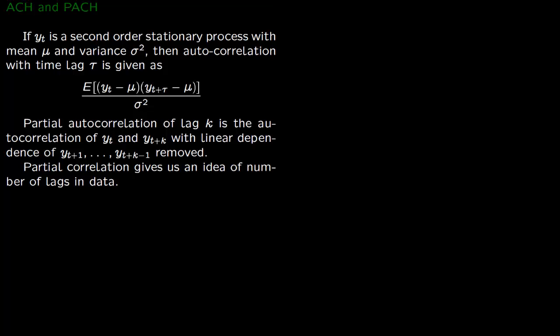Now we talk about autocorrelation function and partial autocorrelation function in some detail. So say you're given Y_t, a second order stationary process with mean μ and variance σ².